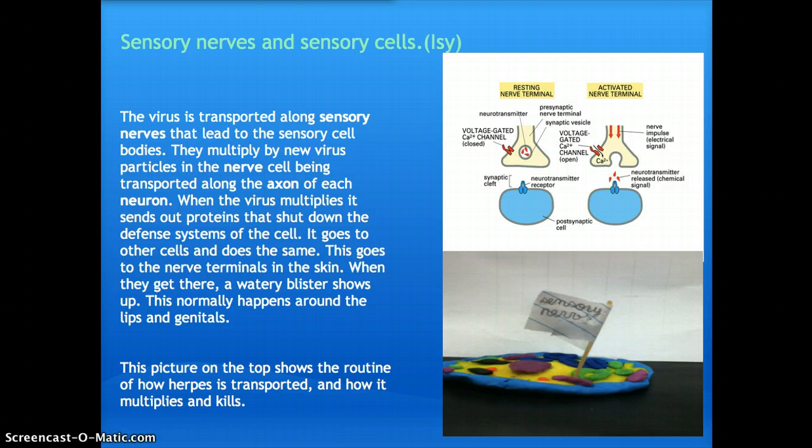They multiply by new virus particles in the nerve cell being transported along the axon of a neuron. If you guys don't know what an axon is, it's like a thread-like thing that comes off of the cell. When the virus multiplies, it sends out proteins that shut down the defense systems of the cell. It goes to the other cells and does the same. This goes to the nerve terminals in the skin. When they get there, the watery blisters show up.